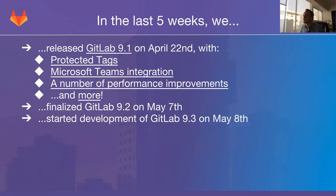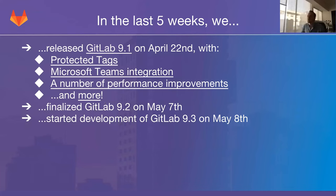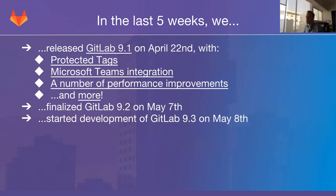First, in the last five weeks, on April 22nd we released GitLab 9.1 exactly a month ago with features such as protected tags, Microsoft Teams integration, and a number of performance improvements. There was far more in this release but these are some of the bigger things my team specifically worked on. Check out the link in the shared document or the GitLab 9.1 blog post for more.